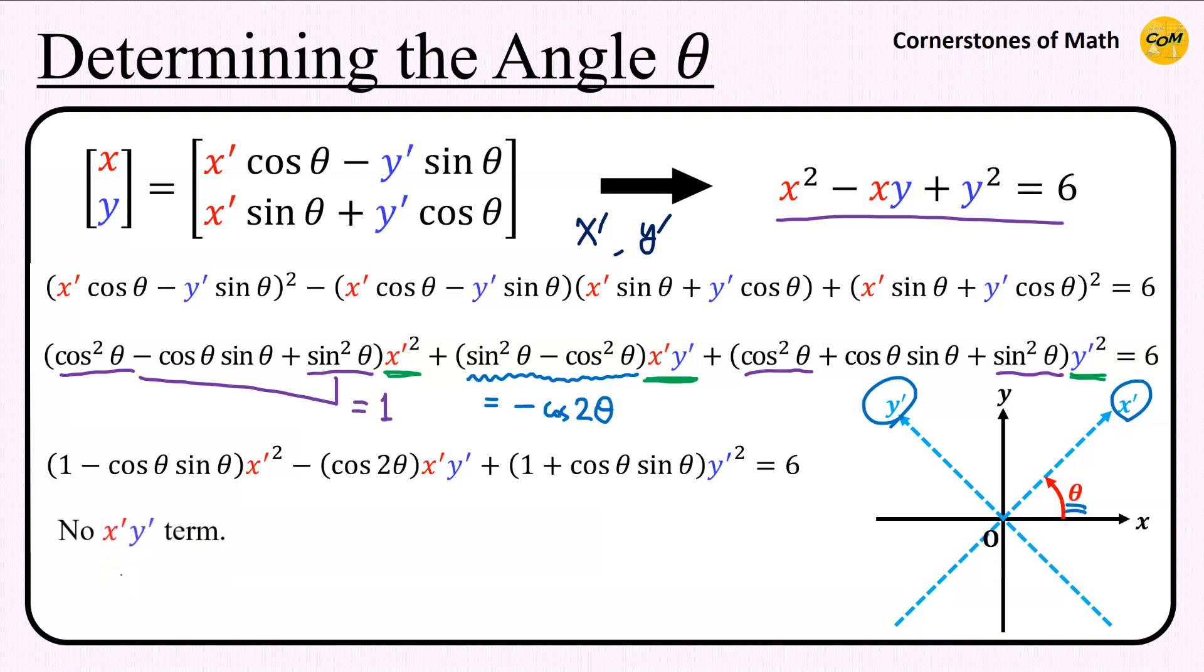And we want this angle theta to have a specific value so that x prime y prime term disappears. This means that the coefficient of that term, cosine 2 theta, must be 0. There are infinitely many values of theta that satisfies this equation, but let us take the simplest one, which is 2 theta equals 90 degrees. So theta equals 45 degrees.